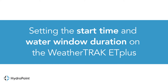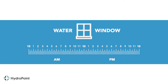Let's set the start time and water window duration on your WeatherTrack ET Plus. The water window is a user-defined window of time when irrigation can occur on a given day. The program the controller calculates may be shorter or longer than that window. If the watering time needed is longer than what's available, it will be carried over onto the next watering day.